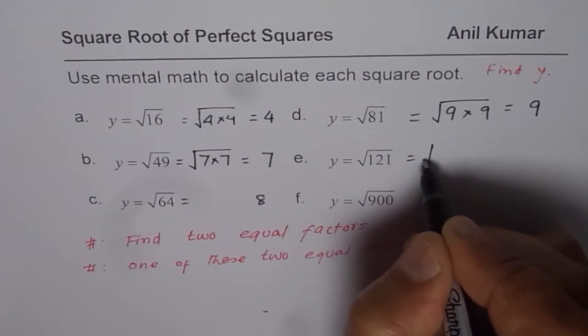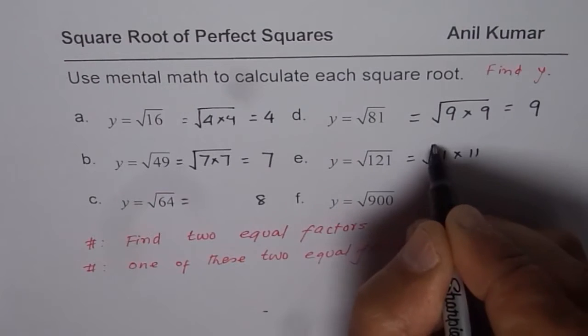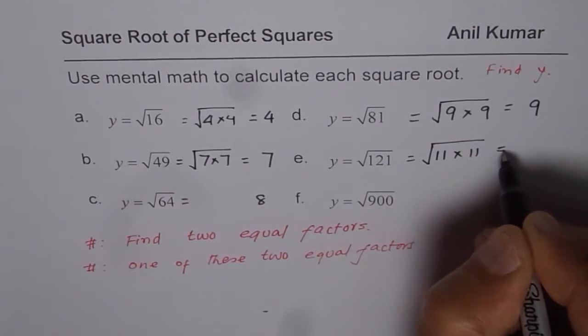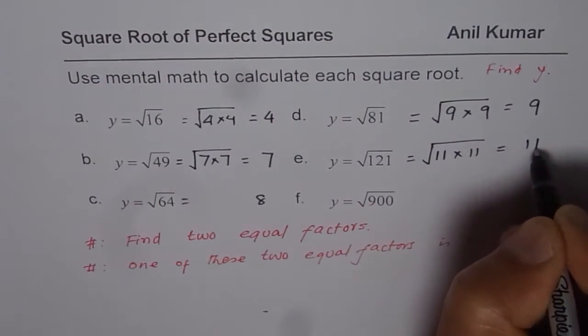As far as 121 is concerned, 11 times 11 is 121. Square root of 121 is 11.